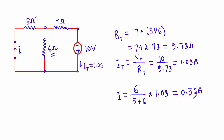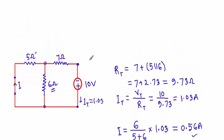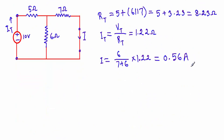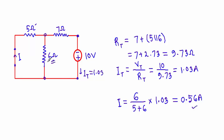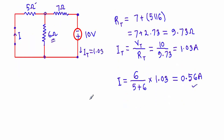This is what the Reciprocity Theorem implies. When I displaced the voltage source from this branch to the other and measured the current through this path, I got the same current as in the earlier case — 0.56 ampere in both cases. This confirms the Reciprocity Theorem. One more important note: always remember that the Reciprocity Theorem is applicable only when the circuit contains a single voltage source. That's it, thank you.